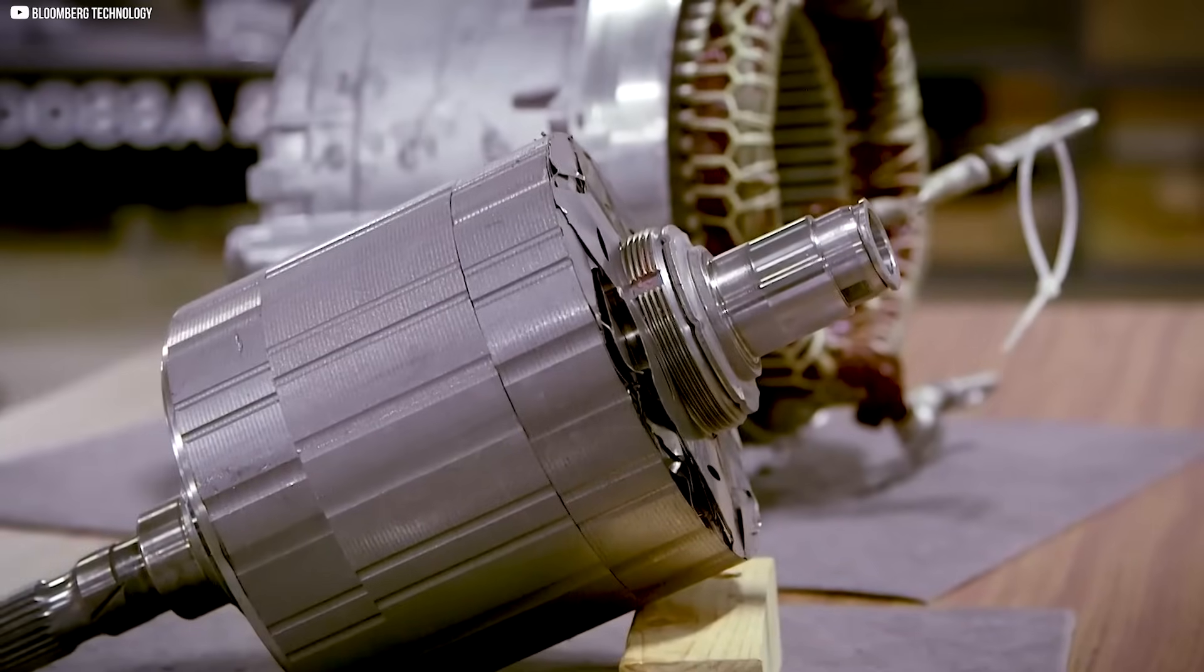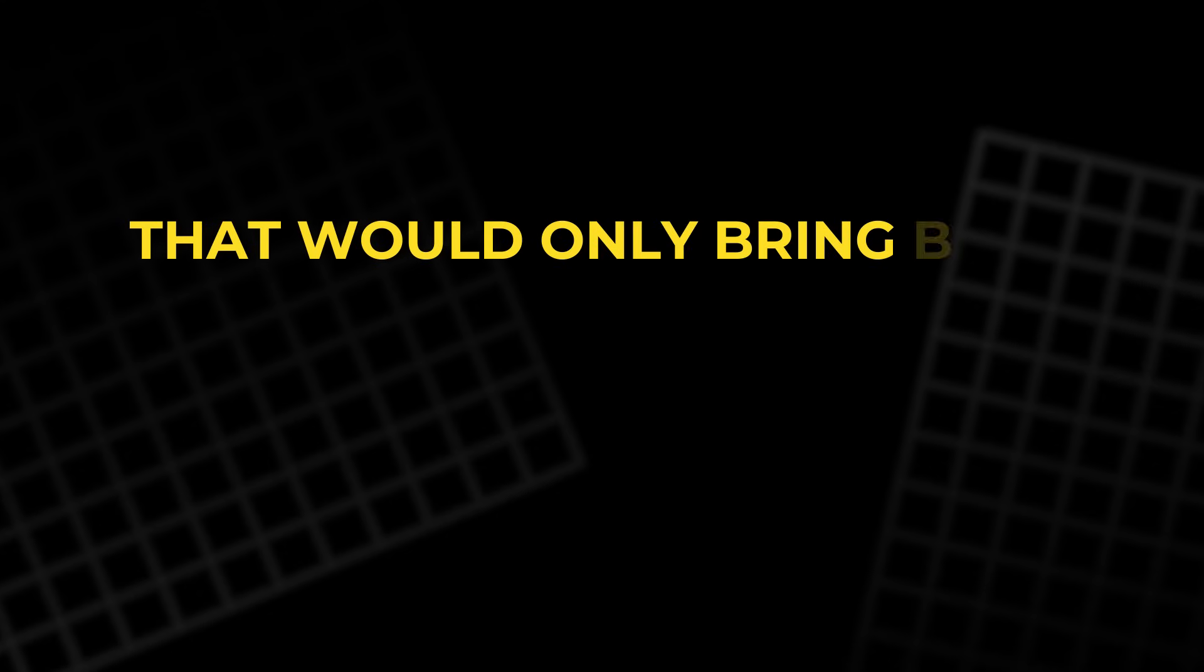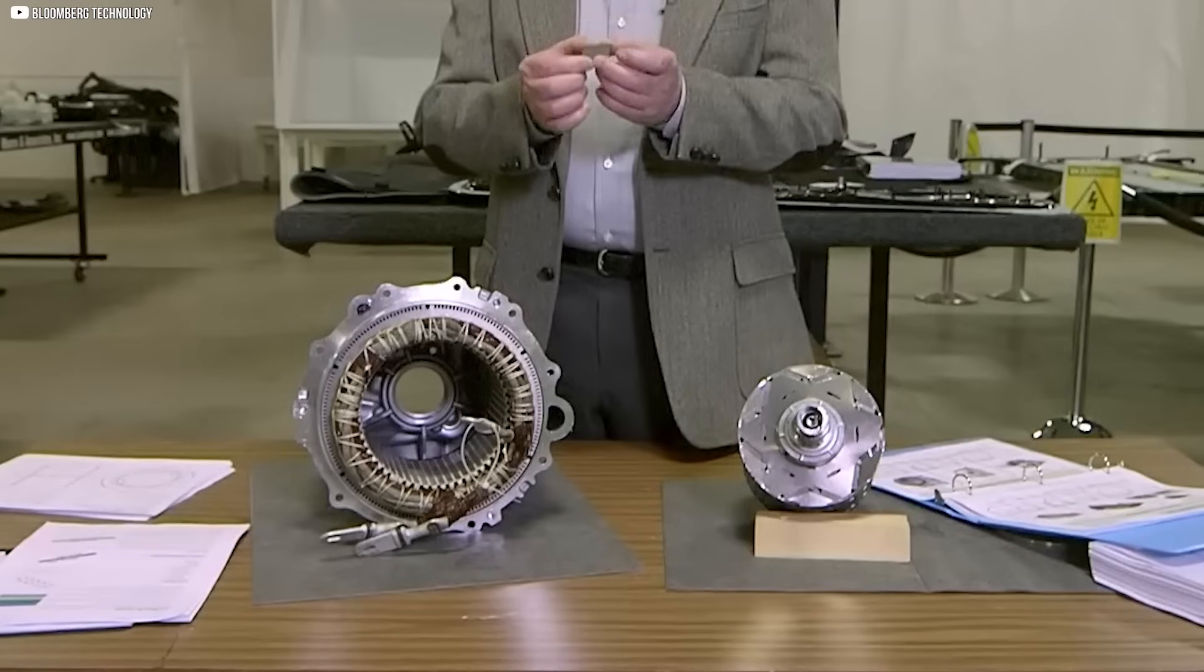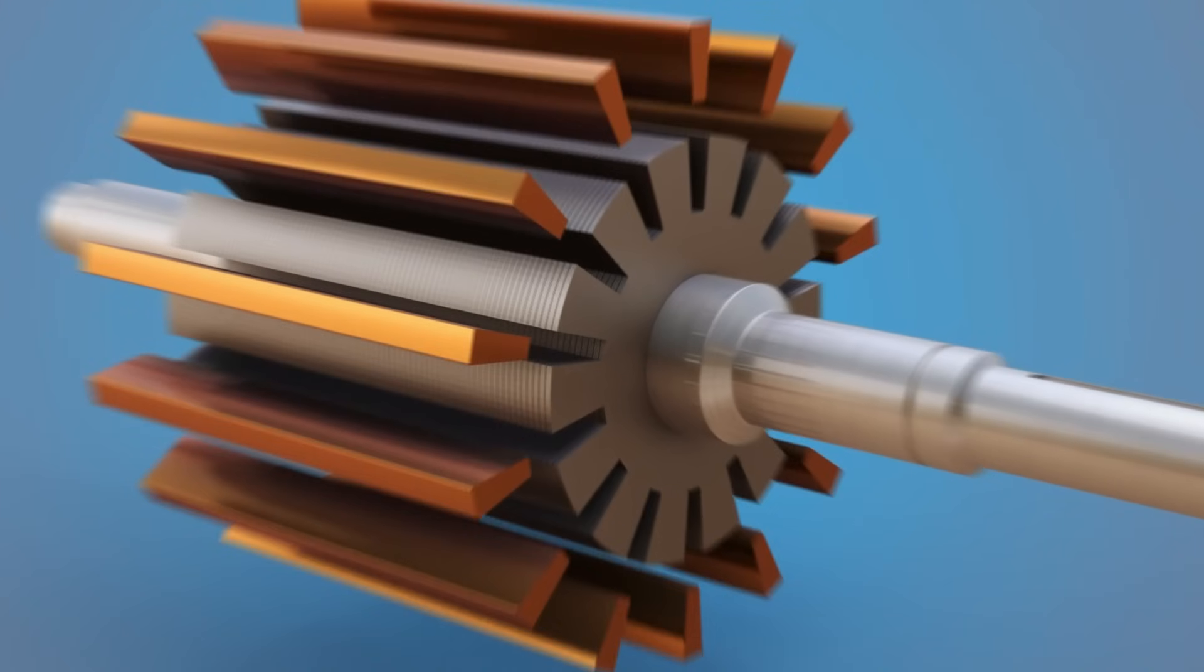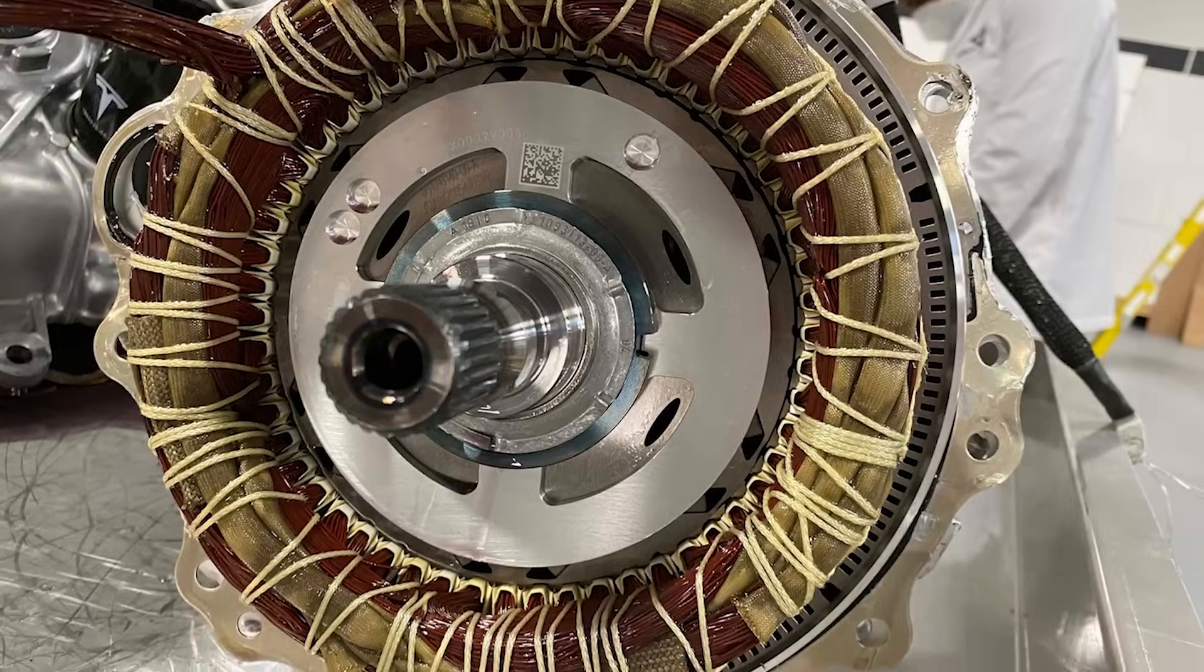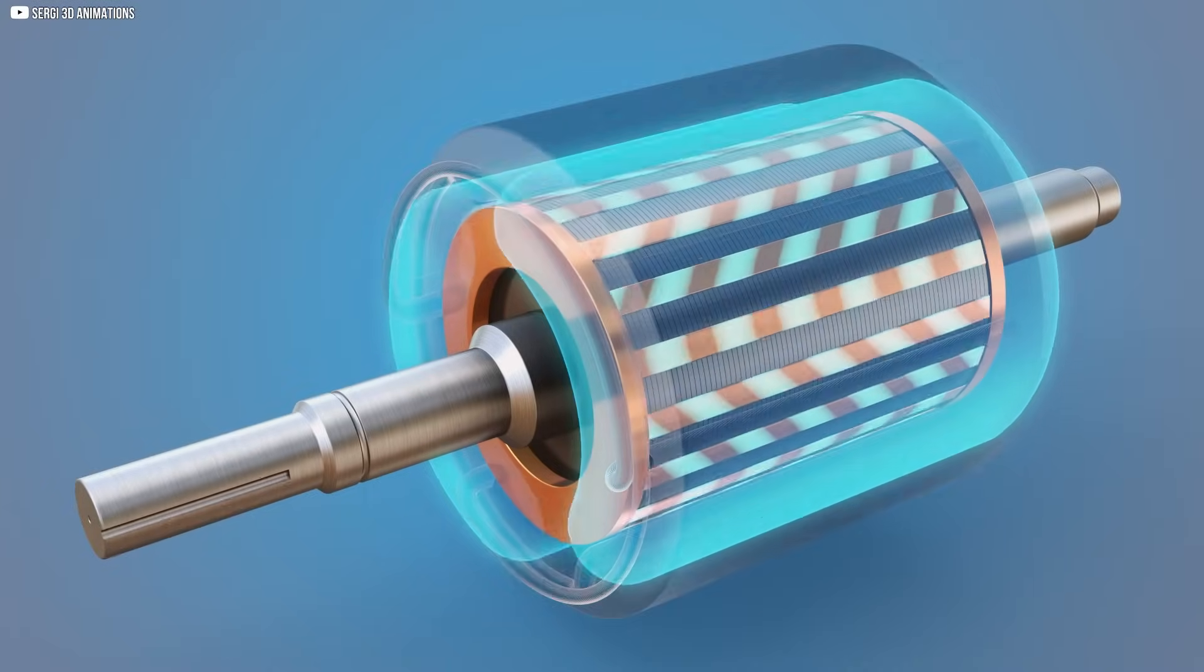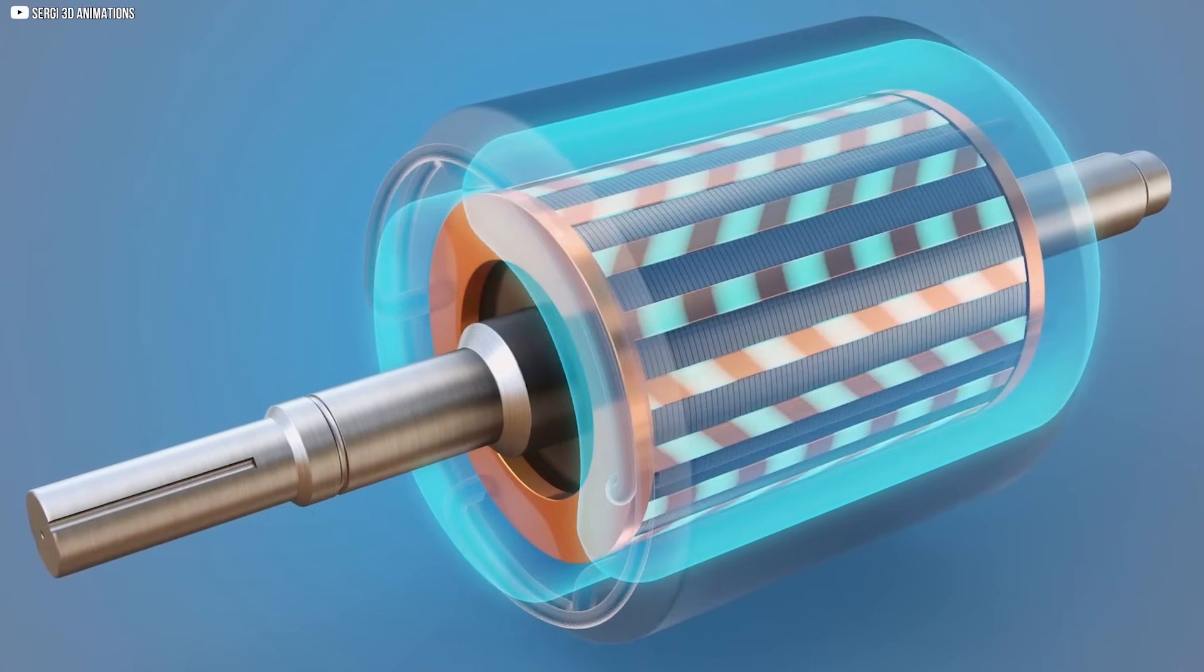The magnets couldn't sit on the rotor's surface like traditional PM motors. That would only bring back the high-speed efficiency problems they were trying to avoid. So the engineers buried the magnets deep inside the iron core of the rotor. They carefully carved out specific slots within the metal, creating paths that would naturally encourage reluctance torque. The magnets themselves were shaped and positioned to balance low-speed power with high-speed control. This layout served two purposes.